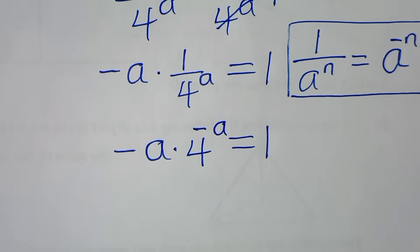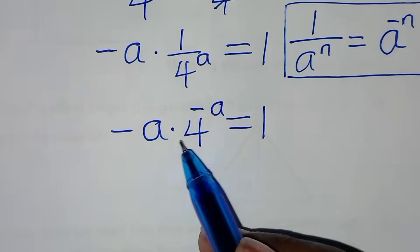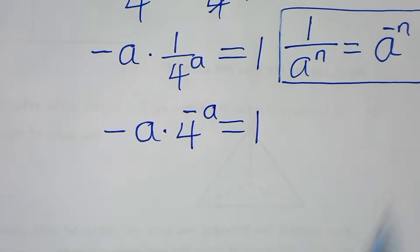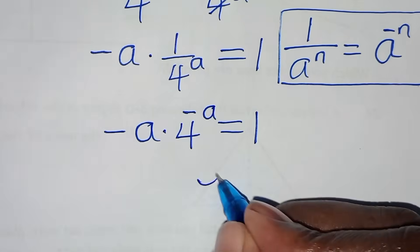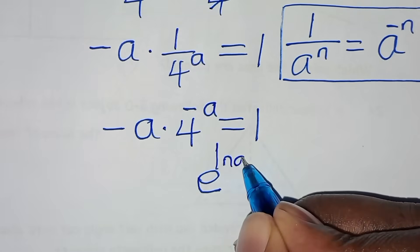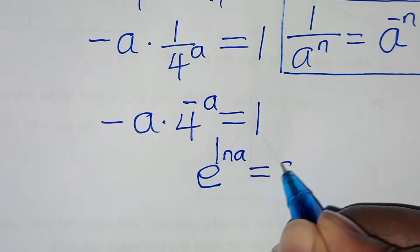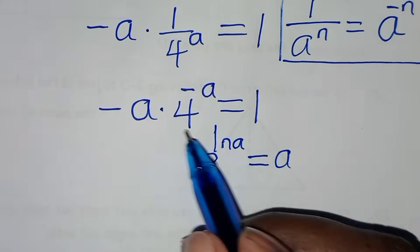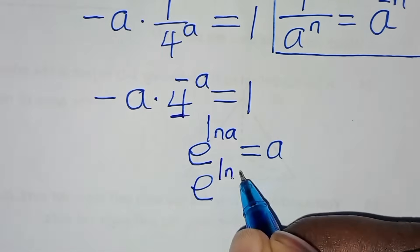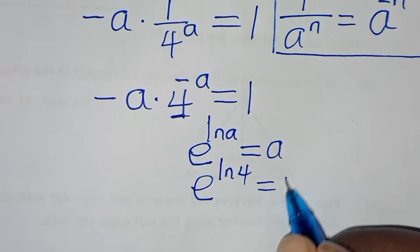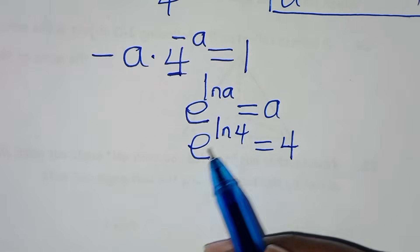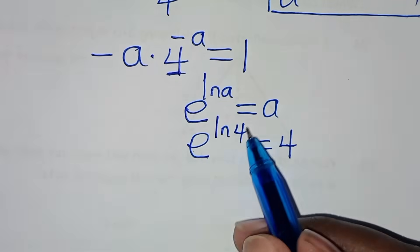The next step is to apply the exponent property: e raised to the power of the natural log of a is the same thing as a. Using this, we can express 4 as e raised to the power of natural log of 4, since that equals 4.